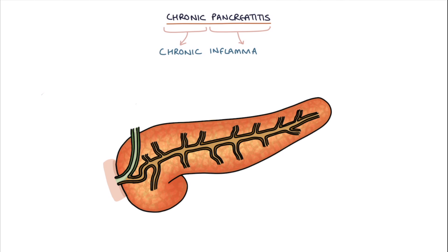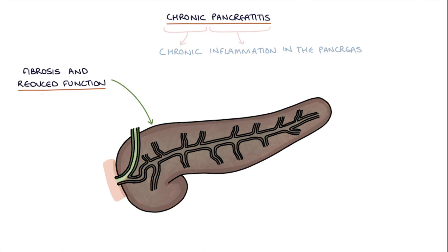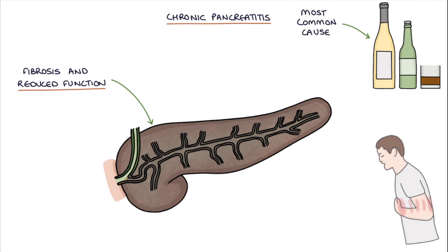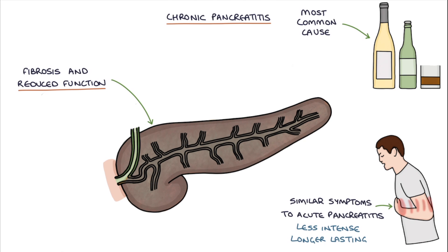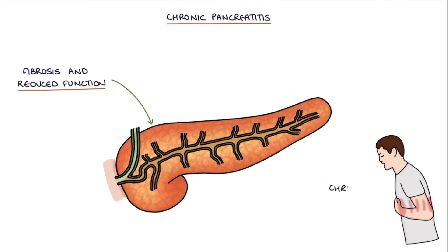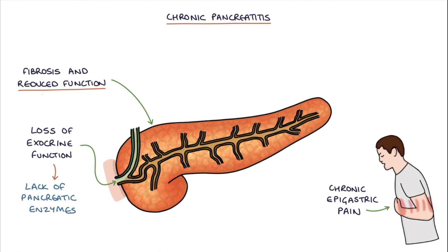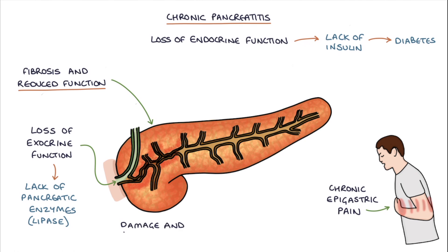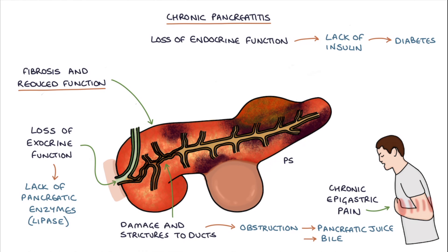Chronic pancreatitis refers to chronic inflammation in the pancreas, resulting in fibrosis and reduced function of the pancreatic tissue. Alcohol is the most common cause. It presents with similar symptoms to acute pancreatitis but generally the symptoms are less intense and longer lasting. Key complications are chronic epigastric pain, loss of exocrine function resulting in lack of pancreatic enzymes — particularly lipase — loss of endocrine function leading to diabetes, damage and strictures to the duct system causing obstruction, and formation of pseudocysts or abscesses.